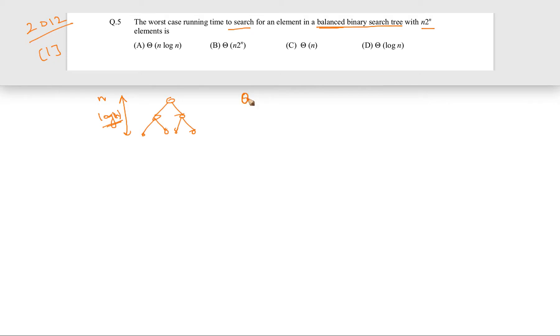So theta log n will be the time definitely if n elements are there. But the only twist here is that the number of elements is not n, rather it is n × 2^n. So what we are going to do is take the log of n × 2^n.